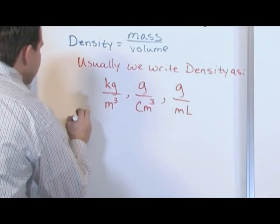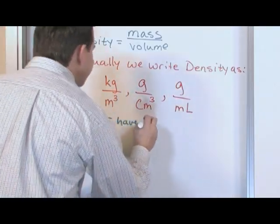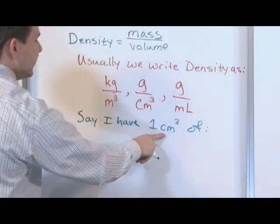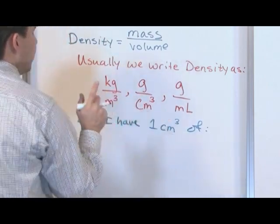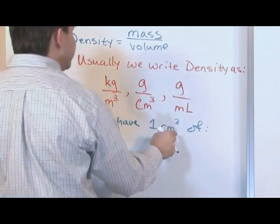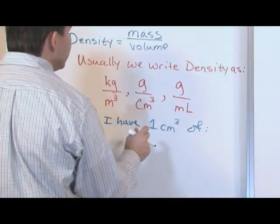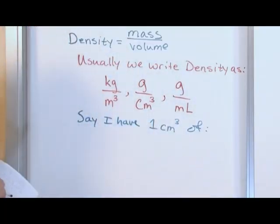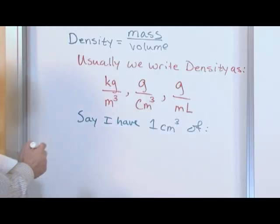Let's say I have one cubic centimeter of each of the following things. Also, when you see centimeters cubed or meters cubed written, try to say it as 'cubic centimeters' rather than 'centimeters cubed' — then you get in your head the idea that it's really a cube with one centimeter on each side.